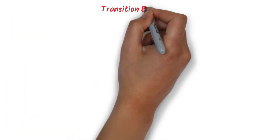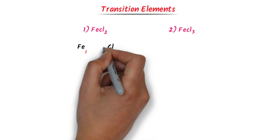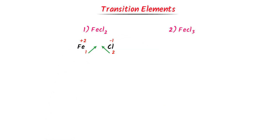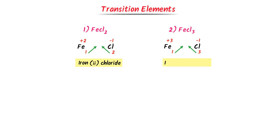Now we will learn naming ionic compounds of transition metals. Consider FeCl₂: according to the criss-cross method, the subscript 2 belongs to iron and 1 belongs to chlorine, so iron carries +2 charge. We write iron followed by the Roman numeral II, giving iron(II) chloride. For FeCl₃: the subscript 3 belongs to iron and 1 belongs to chlorine, so iron carries +3 charge. We write iron(III) chloride. Iron(II) chloride means iron has +2 charge; iron(III) chloride means iron has +3 charge.